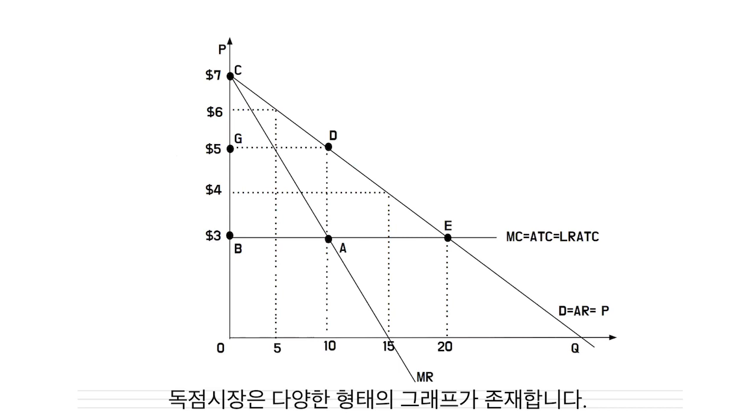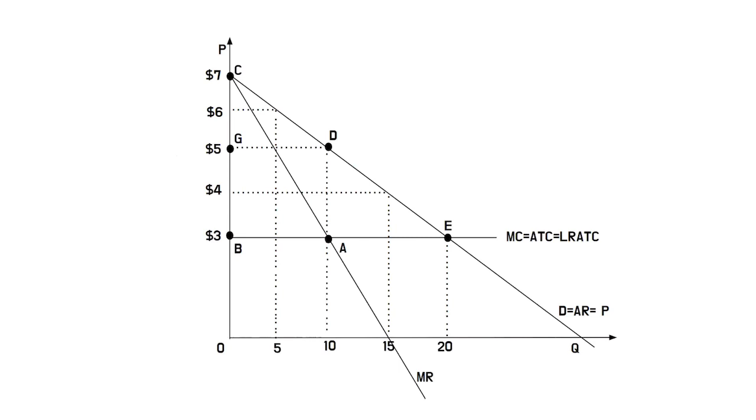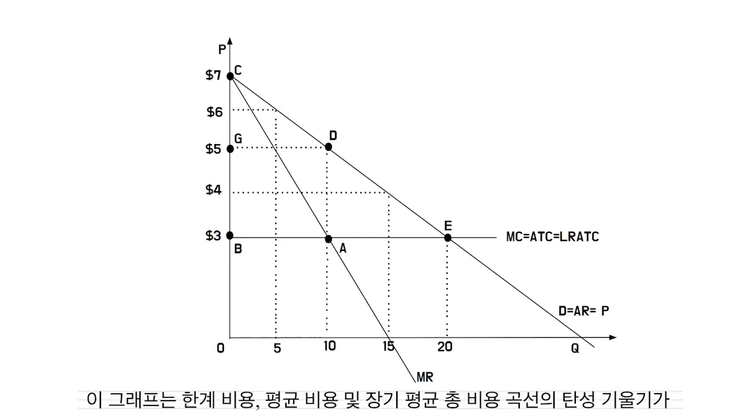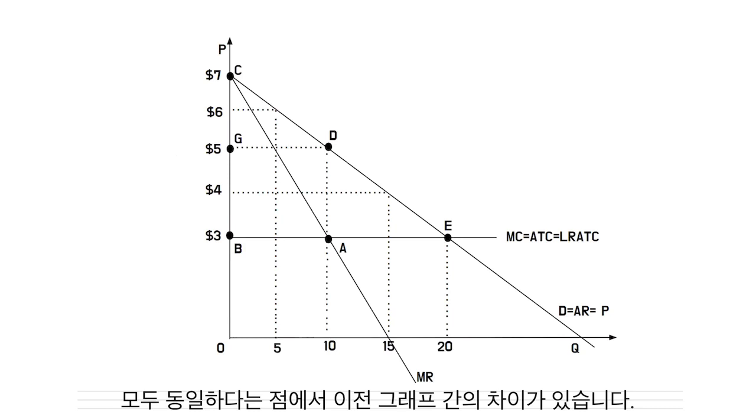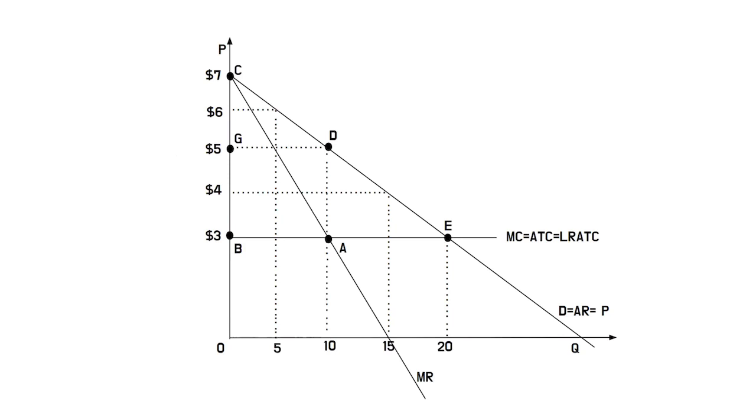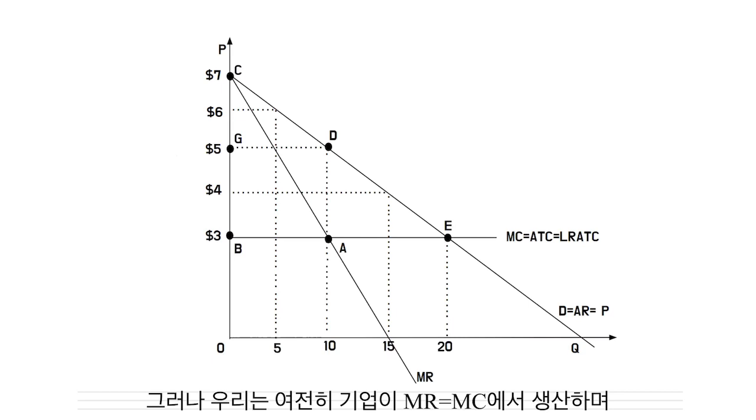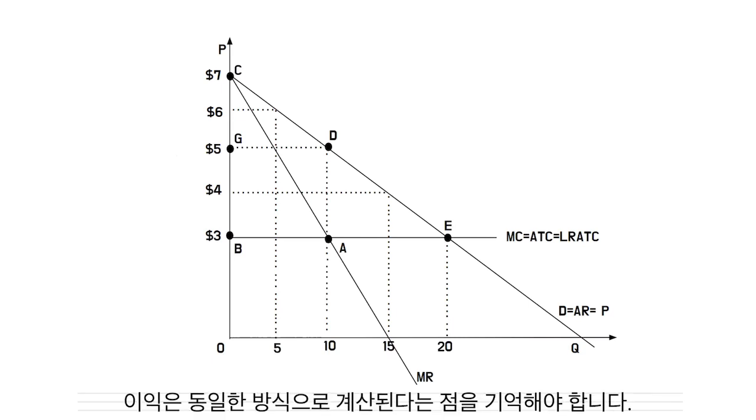It is important to graph several different versions of a Monopoly graph. This graph has a difference from the previous graphs, that the marginal cost, the average cost, and the long-run average total cost curves have all the same perfectly elastic slope. But we still have to remember that firms produce at MR equals MC, and the profit is calculated in the same way.